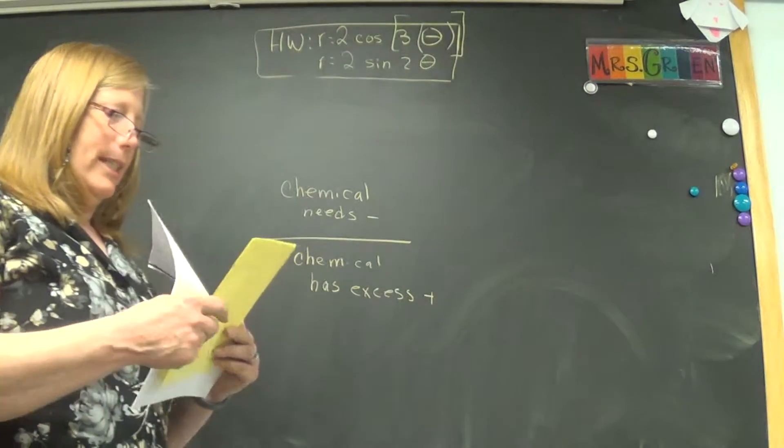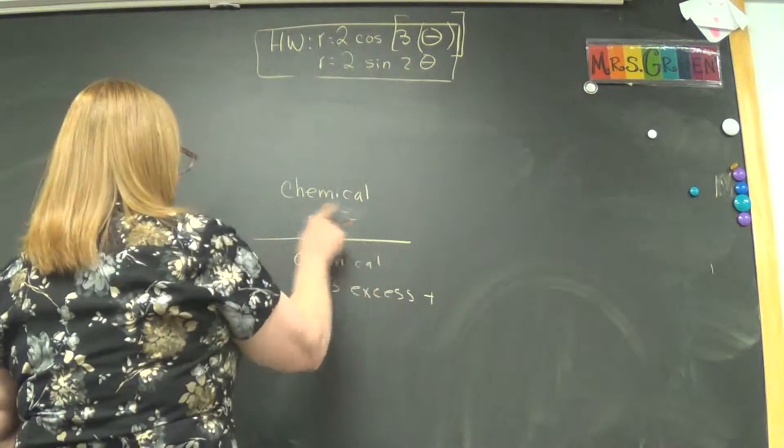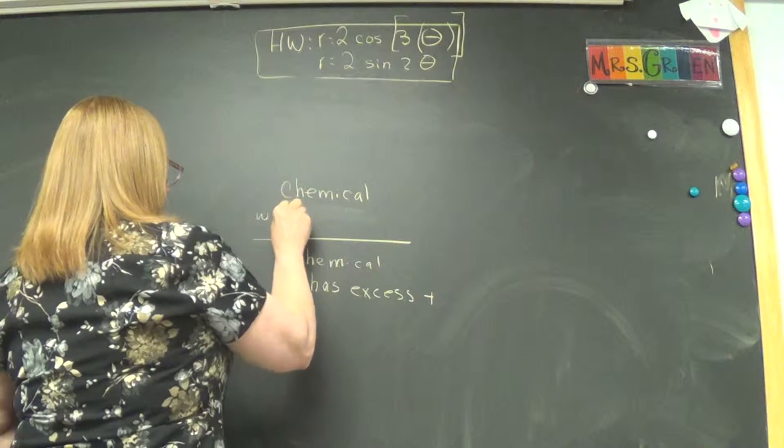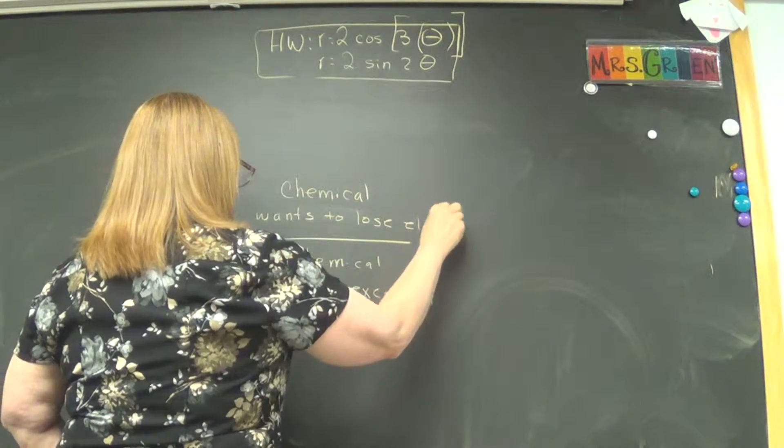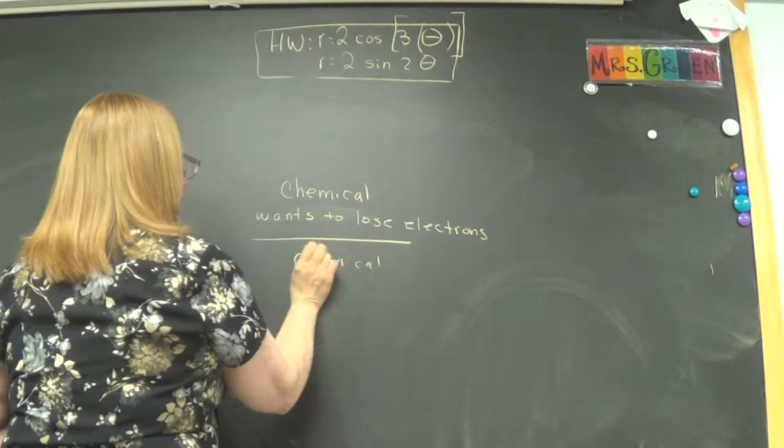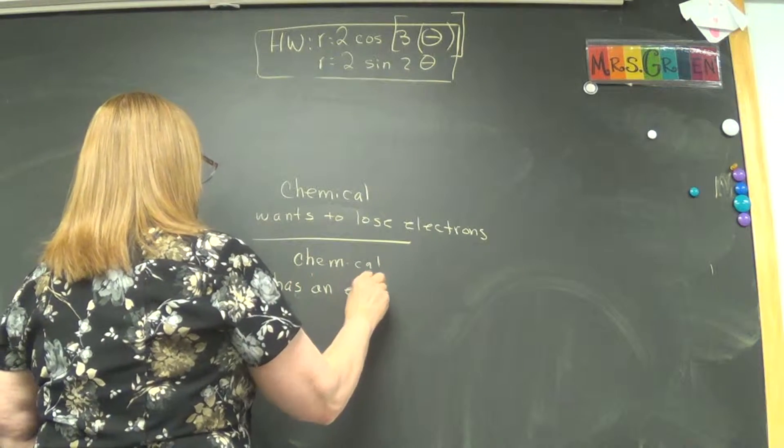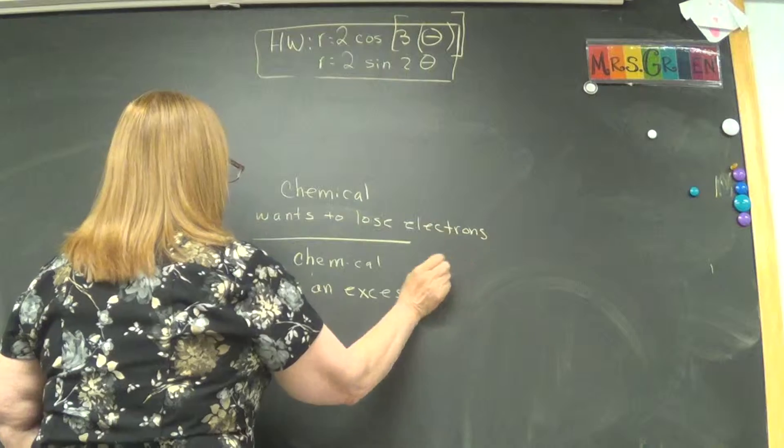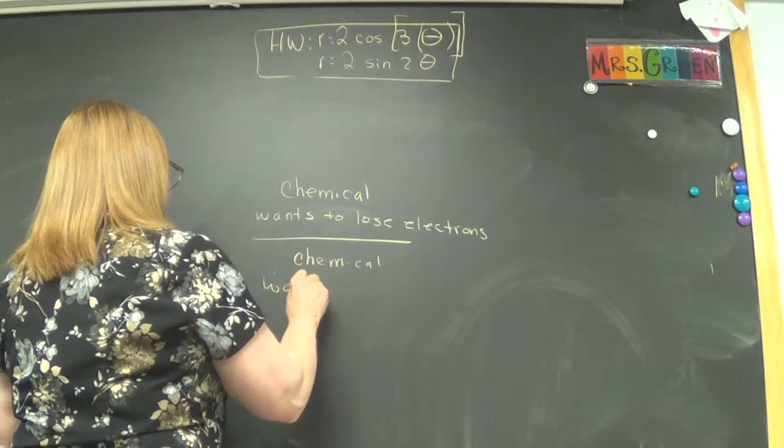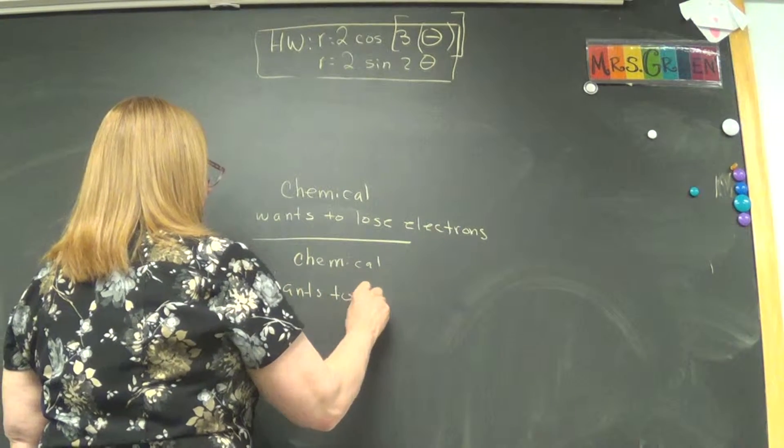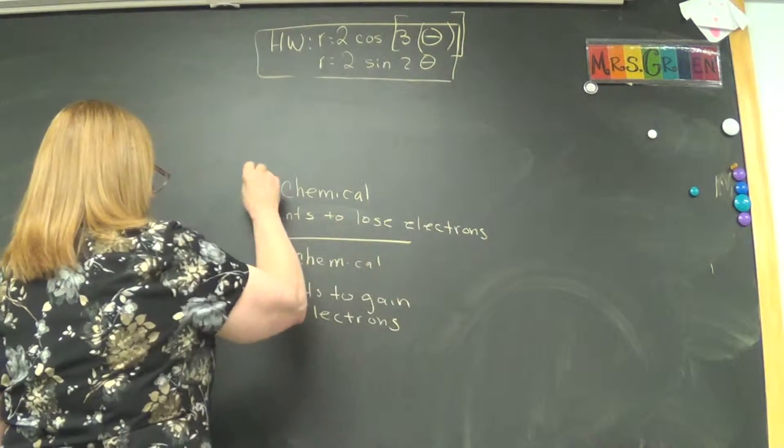So what I wanted to say is let's all do it the same. Up here, a chemical that wants to lose electrons. And a chemical down here that has an excess. I'm sorry. Chemical wants to lose electrons. Chemical down the bottom wants to gain electrons. And the barrier exists between the two. Thank you. I forgot I had a blank in the middle of that.